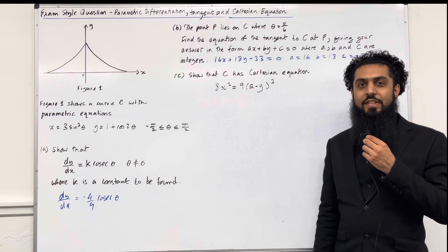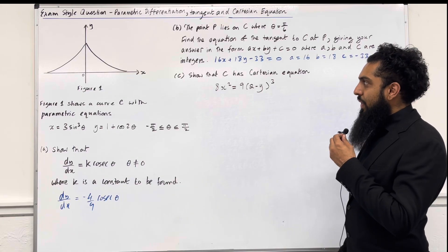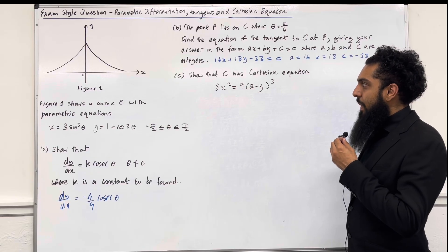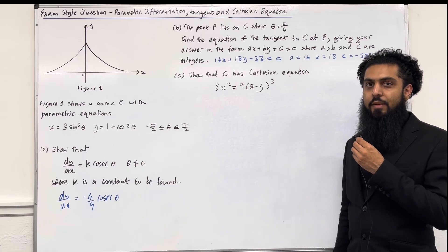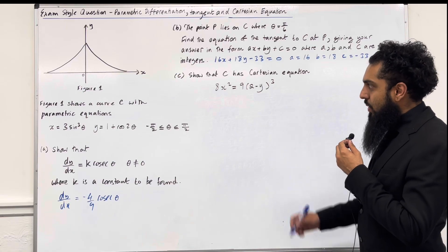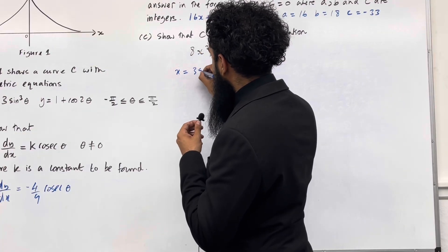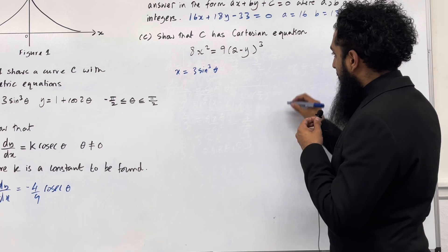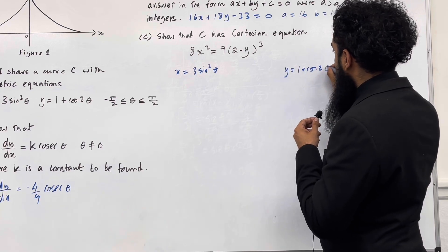Moving on to the final part, part C. Show that C has Cartesian equation 8x squared equals 9 lots of 2 minus y to the power 3. Please pause the video, have a go at part C and then play the video. Let's have a look at the solution. The x parametric is x equals 3 sine cubed theta, and the y parametric is y equals 1 plus cos 2 theta.